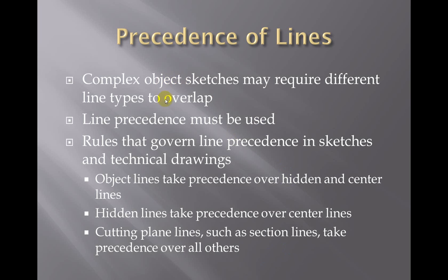Complex object sketches may require different line types to overlap, so that's when we use these line precedents. Object lines take precedence over hidden and center lines. Hidden lines take precedence over center lines. Cutting plane lines, such as section lines, take precedence over all others. We need to be able to show that the plane was cut so that people know you're missing part of that object in order to see the interior detail.